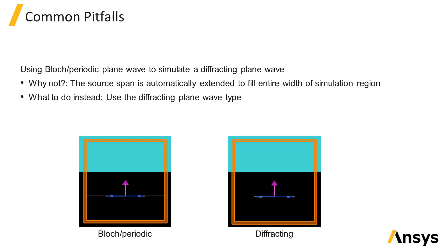Now that we've gone over the three types of plane wave sources: Bloch periodic, BFAST, and diffracting, let's go over some common pitfalls and ways to correct them.